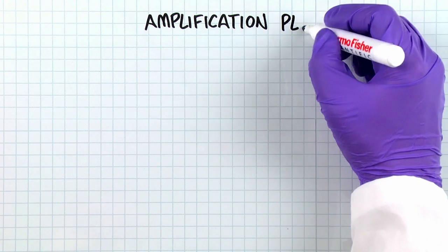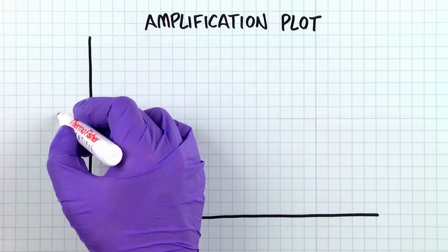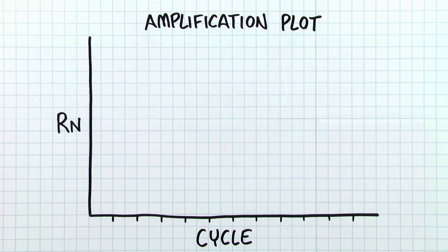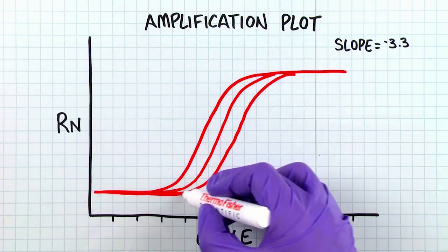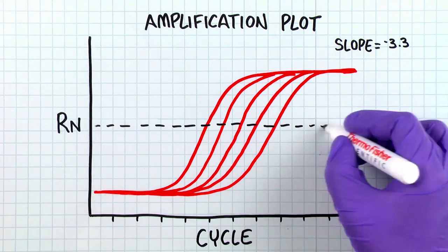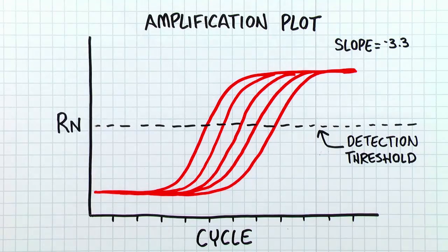The slope measures the efficiency of the PCR reaction. In a perfect world, a slope of negative 3.3 indicates that the PCR reaction is 100% efficient. The target DNA is doubled each cycle. Two copies become four, four become eight, and so on.